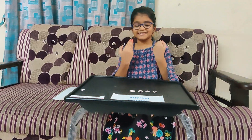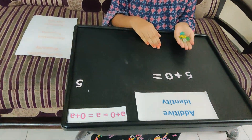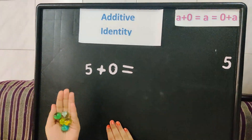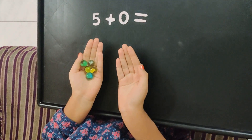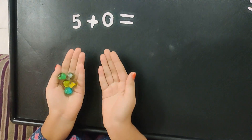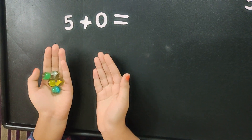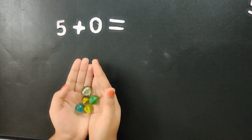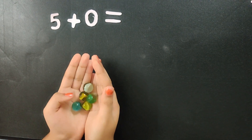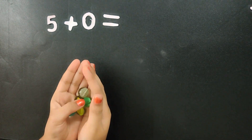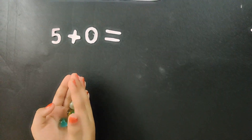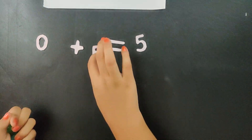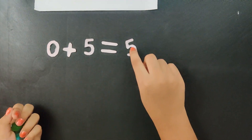Let's apply this knowledge here. I took 5 marbles and 0 marbles. Addition is grouping together. Now I am going to add 5 plus 0: 1, 2, 3, 4, 5. So 5 plus 0 is 5. And 0 plus 5 is also 5.